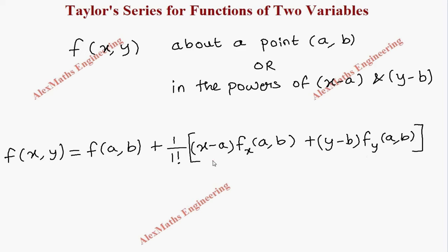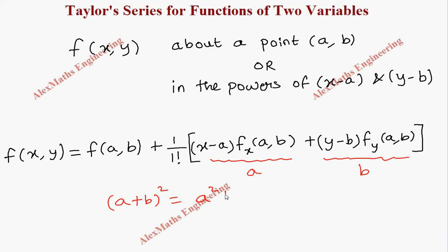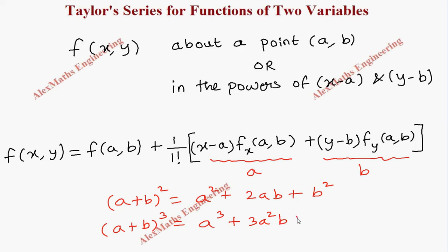Once we know how to write this term, we can write the rest of the terms. We treat this part like a and this part like b, so the next term will be of the form a plus b whole square. We know a plus b whole square is a squared plus 2ab plus b squared. After that, we will be using the a plus b whole cube form, which is a cubed plus 3a squared b plus 3ab squared plus b cubed.